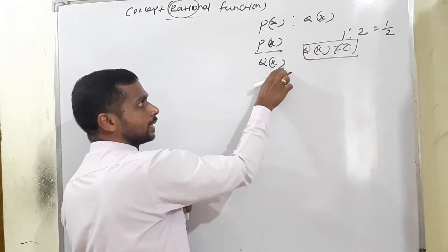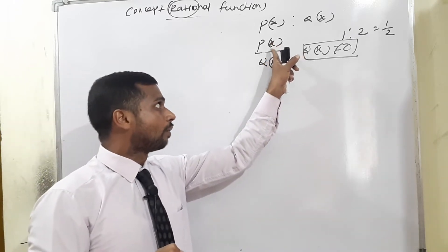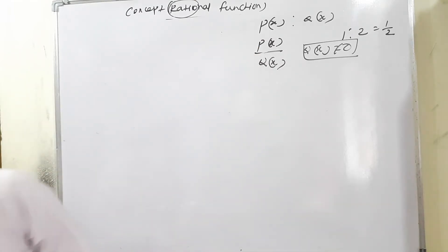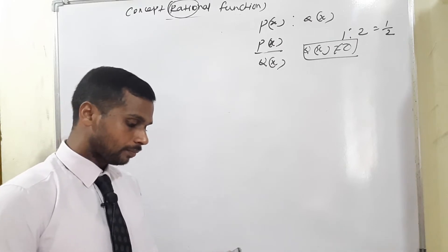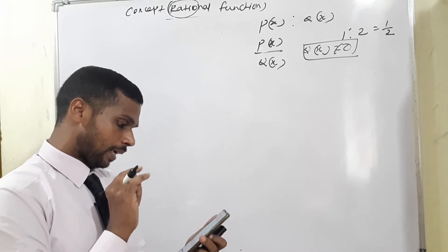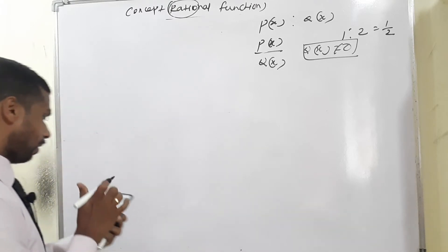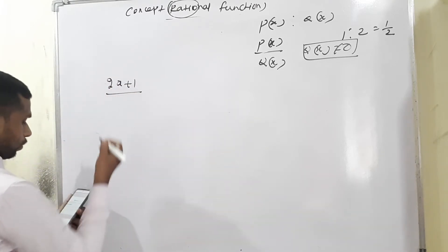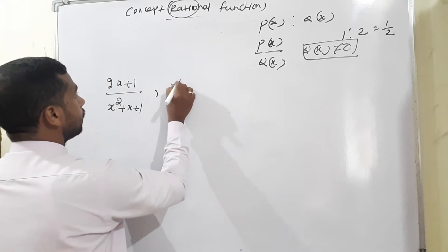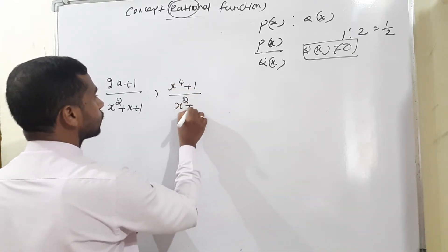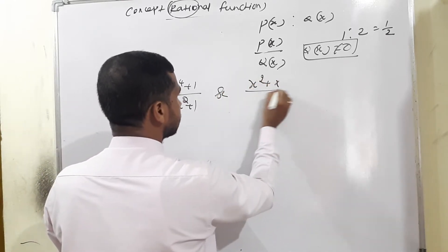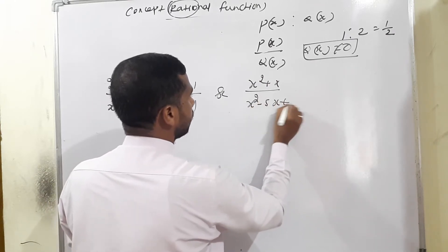Examples of rational expressions: (2x+1)/(x²+x+1), (x⁴+1)/(x²+1), and (x²+x)/(x²-5x+6). If the degree of the numerator p(x) is greater than or equal to the degree of the denominator q(x), we can write p(x) = f(x)·q(x) + r(x), where r(x) is the remainder.